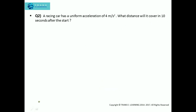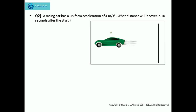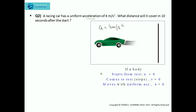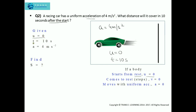The next question: a racing car has a uniform acceleration of 4 meter per second squared. You can see here a racing car with a uniform acceleration of 4 meter per second squared. What distance will it cover in 10 seconds after the start? When a body starts from rest, the initial velocity is 0. So the initial velocity is 0, time taken is 10 seconds, and acceleration is 4 meter per second squared. We need to find the distance covered.